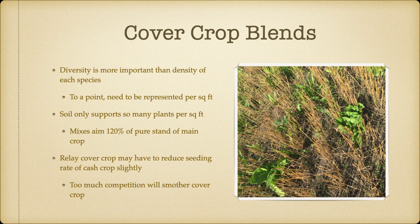At the end of the day, diversity is more important than the density of each species to a point. It needs to be represented per square meter, but you don't need to have a full carpet — it's not your main cash crop unless it is a full-season cover crop. Your soil will only support so many plants per square foot per square meter. Basically, you aim for 120% of the pure stand of the main crop: if you're seeding oats at 30 seeds per square foot, 120% of 30 is 36 seeds in total of your cover crop plus oats. When seeding relay cover crops, you may have to reduce the cash crop seeding rate slightly — 10 to 15% — because too much competition will smother your cover crop. Or we're going to have to look at adding it later in the season when the leaves start dropping and we're starting to get more light interception back to the soil.